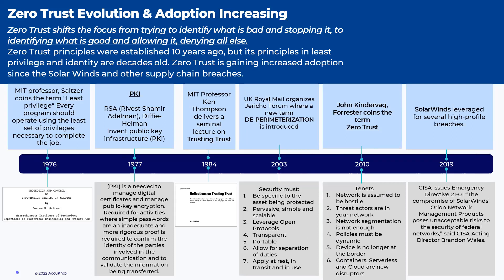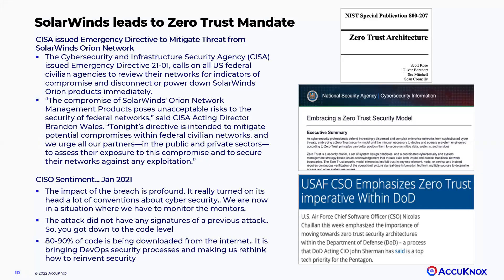Zero trust security is not a new concept. MIT professor Jerry Saltzer introduced the concept of least privilege 45 years back. Since then, it's gone through multiple refinements, resulting in John Kindervag coining the term zero trust in 2010. It came into vogue after the SolarWinds attack and has become the need of the hour since the massive Log4j attack. Given the massive scale and vicious nature of the SolarWinds, Log4j, and more recently, Okta attacks, the US Department of Defense has strongly advised organizations to implement zero trust.